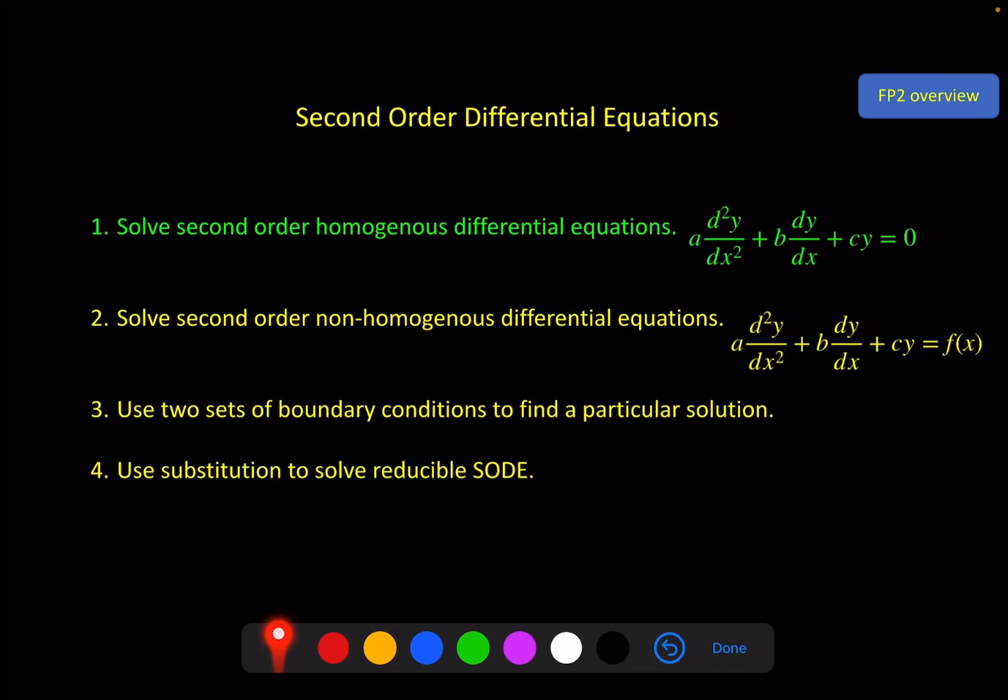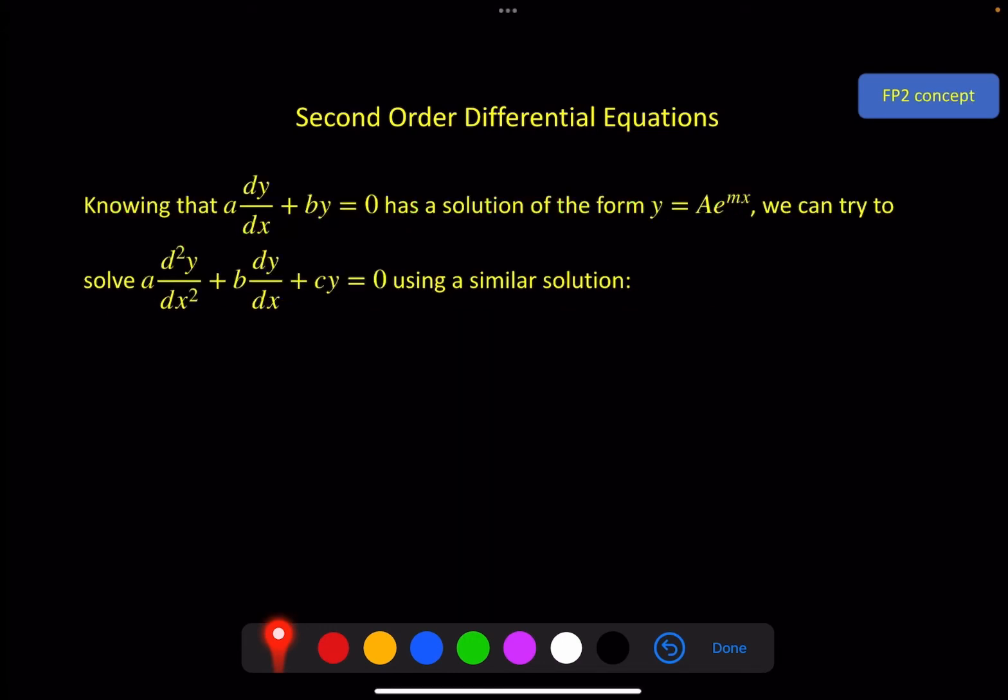So let's go for second order homogeneous differential equations. From our starter, knowing that dy/dx + by = 0 has a solution of the form y = Ae^(mx), we can try to solve d²y/dx² + b dy/dx + cy = 0 using a very similar solution. What we're going to use is y = Ae^(αx) + Be^(βx).